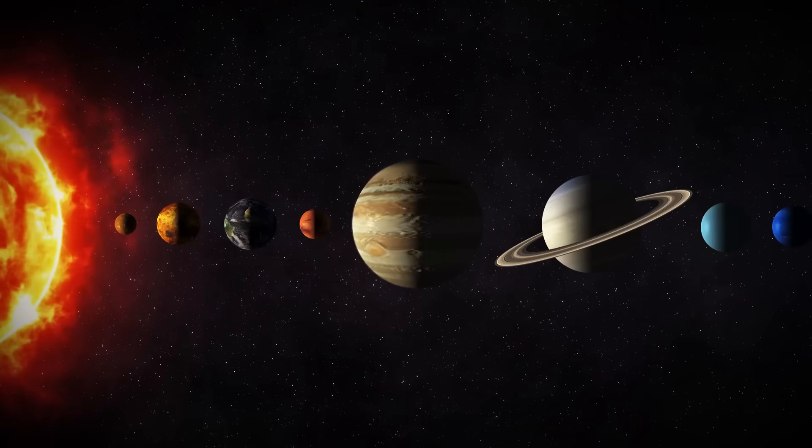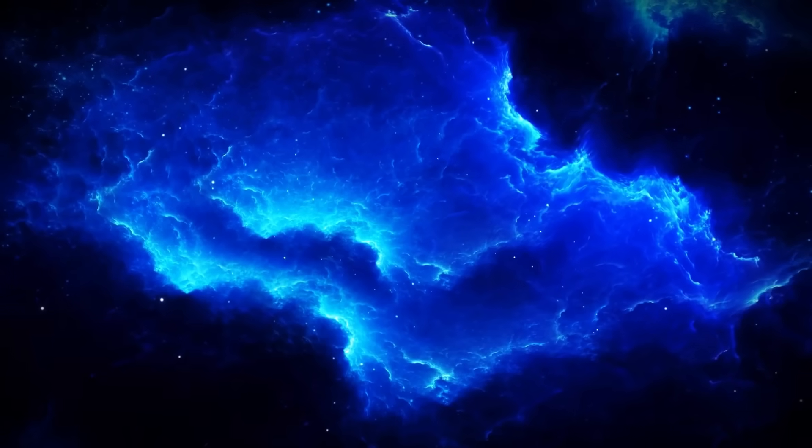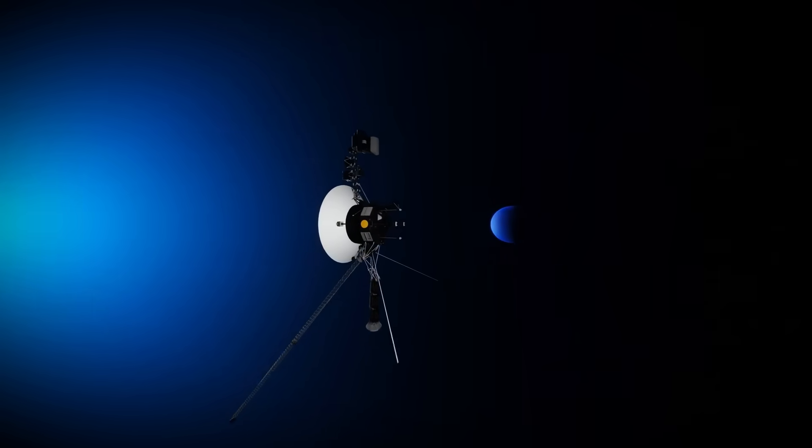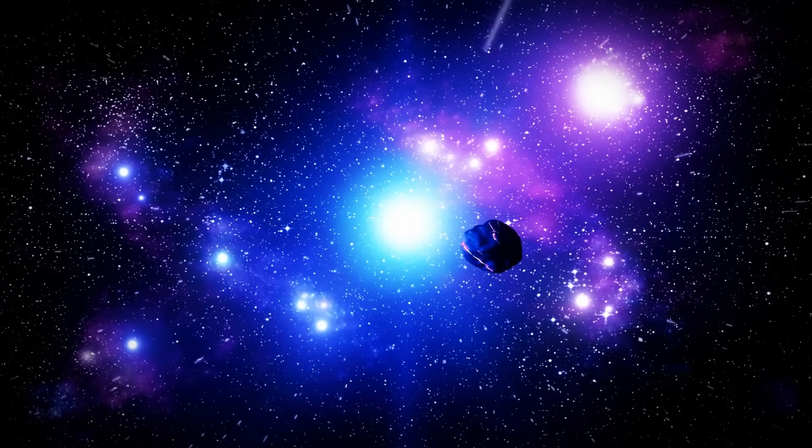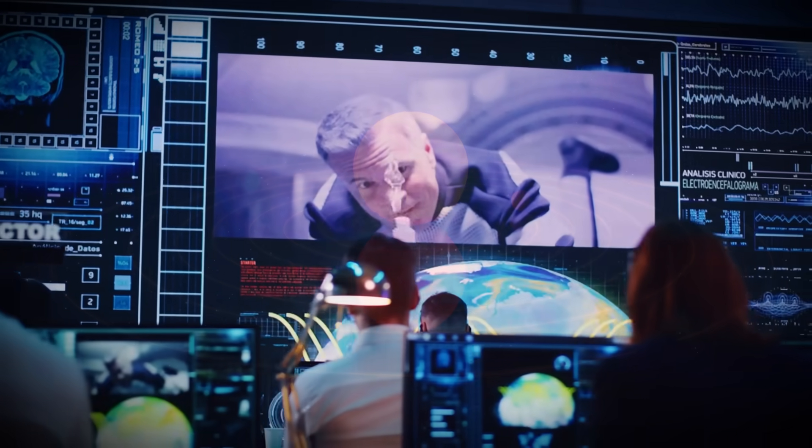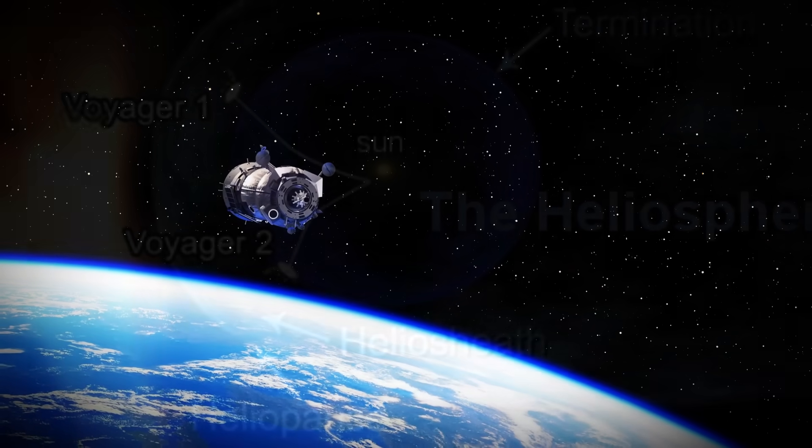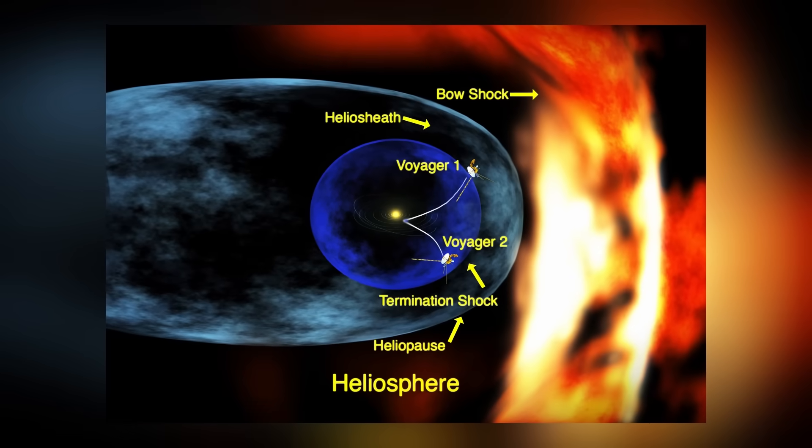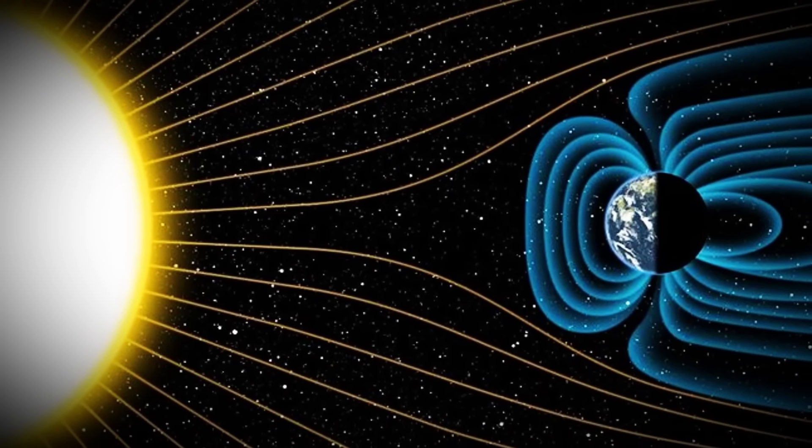Voyager 2's discoveries at the edge of the solar system will play a crucial role in shaping future exploration, providing a foundation for studying the interstellar medium and the interactions between stars like our sun. Upcoming missions, such as the interstellar probe, seek to build on Voyager's legacy by traveling even farther into interstellar space. By analyzing data from both Voyager 1 and Voyager 2, scientists have gained deeper insight into the boundaries of our solar system. The slightly different conditions both spacecraft encountered while crossing the heliopause highlighted the uneven shape of the heliosphere.